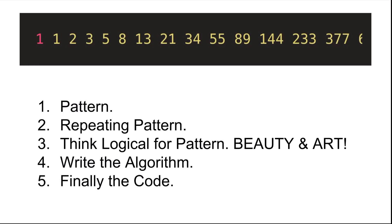First, let's understand the Fibonacci series mathematically. How do you calculate a number in the Fibonacci series? Fibonacci 1 is 1. If you add Fibonacci 1 and Fibonacci 1, that is 1 plus 1 equals 2. You can then add Fibonacci 2 to get the next value. So Fibonacci 3 is 1 plus 2, which is 3.